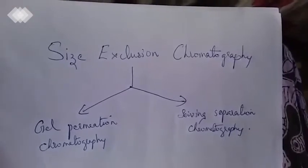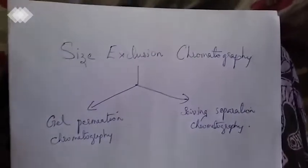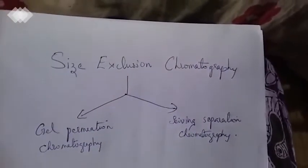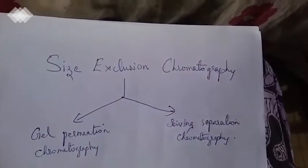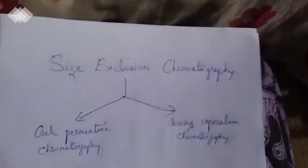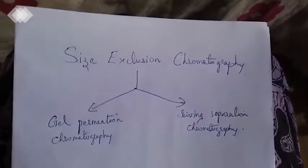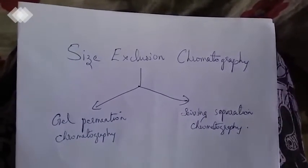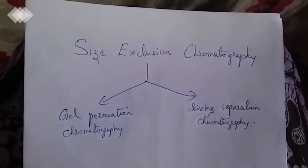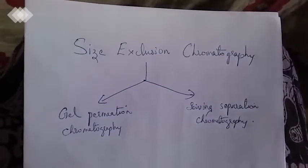What is size exclusion chromatography? In size exclusion chromatography, we have a separation of molecules by molecular size. We have a mixture of molecules of different sizes. There are two types of gel permeation chromatography.